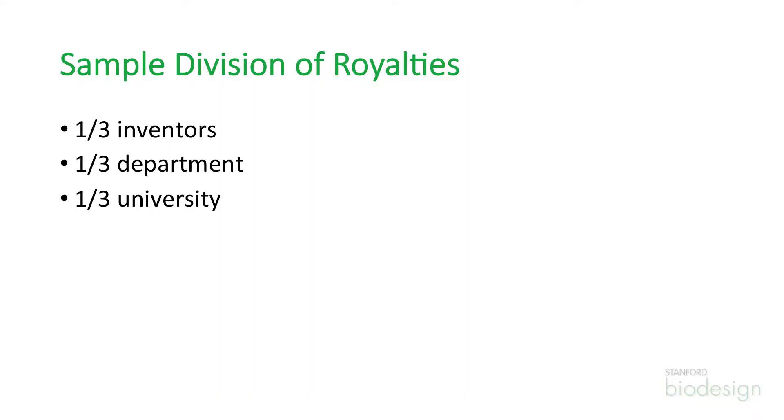Stanford is very good about how it distributes equity. The way it worked when we did our license — and I don't think it's changed — the royalty stream was essentially divided one-third amongst inventors, one-third to the department, and one-third to the university. That was how both royalty and equity that came back was distributed.